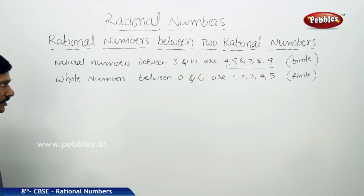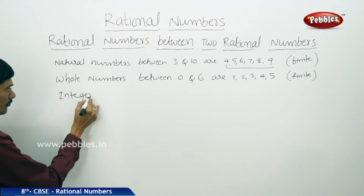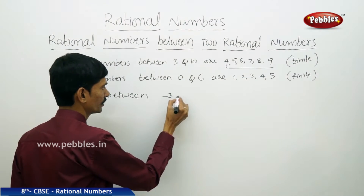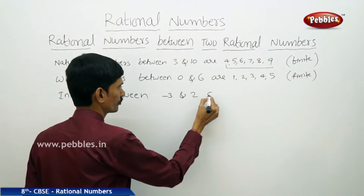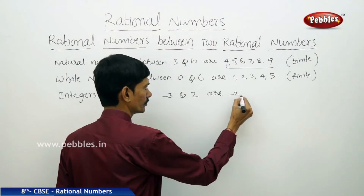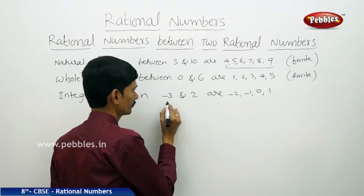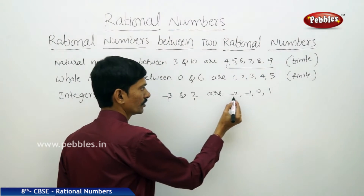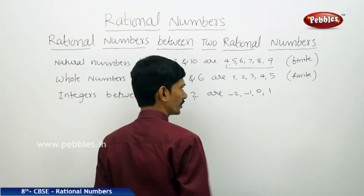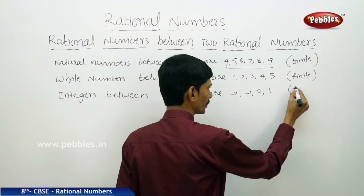Now let us find integers between two integers: between minus 3 and 2. The integers between minus 3 and 2 are minus 2, minus 1, 0, and 1 — so there are 4 integers between minus 3 and 2. Here also, finite integers are there.